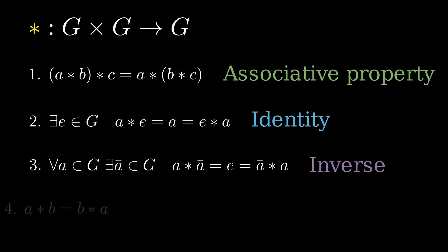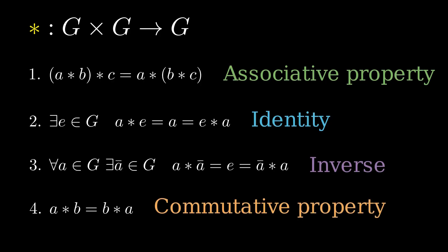But wait, there's more. If the operation also satisfies the commutative property, meaning the order of the elements doesn't matter, then we call it an abelian group.